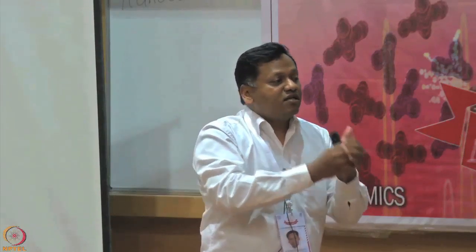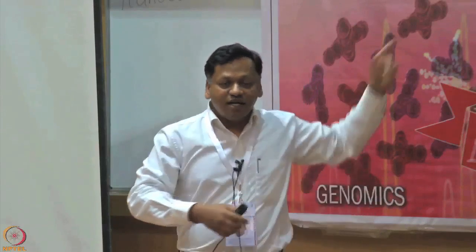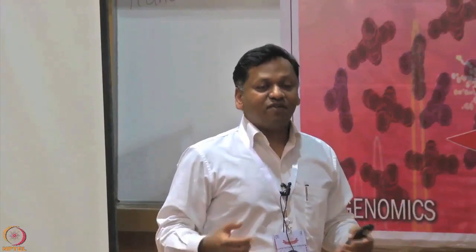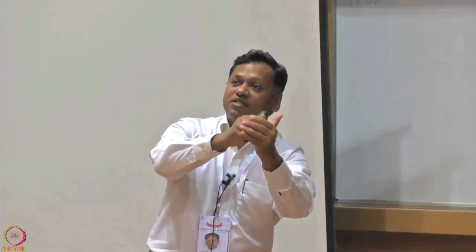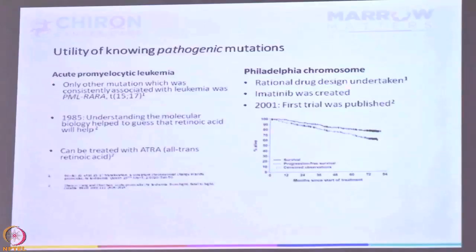This is called rational drug design. Until this point, all medicines — from chloroquine for malaria to penicillin as an antibiotic, or chemotherapy — were found by accident. Most scientific discoveries are by accident: people try 100 things, something kills the cell, and they use it. This was the first time rational drug design was applied — because now you know the pathobiology and can create something to inhibit it. The result was Glivec, that is Imatinib, and it changed the world for CML patients.